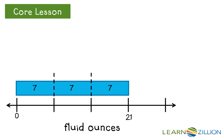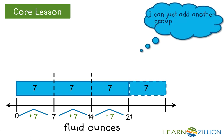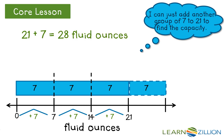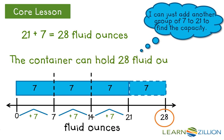Now let's mark each point on our number line by adding seven every time. Zero plus seven equals seven. Adding another group of seven gets me to 14, and we can check our work by adding seven to 14, which gets us to 21 fluid ounces. So all I have to do now to find the total capacity of the container is add one more group of seven to the 21 ounces she originally poured in. And 21 plus seven gets me to 28 fluid ounces — the container can hold 28 fluid ounces at capacity.